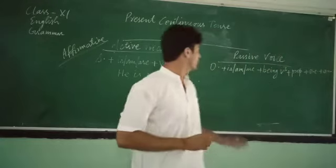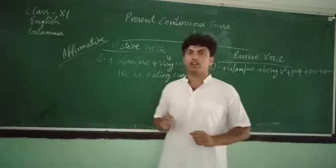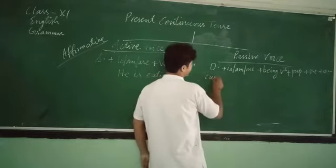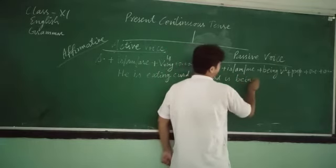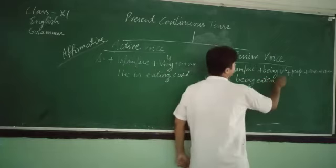Suppose we have to change it. He is eating curd into passive form. We are going to write first object. Object is curd. Curd is singular, so is, being eaten, by him. Curd is being eaten by him.